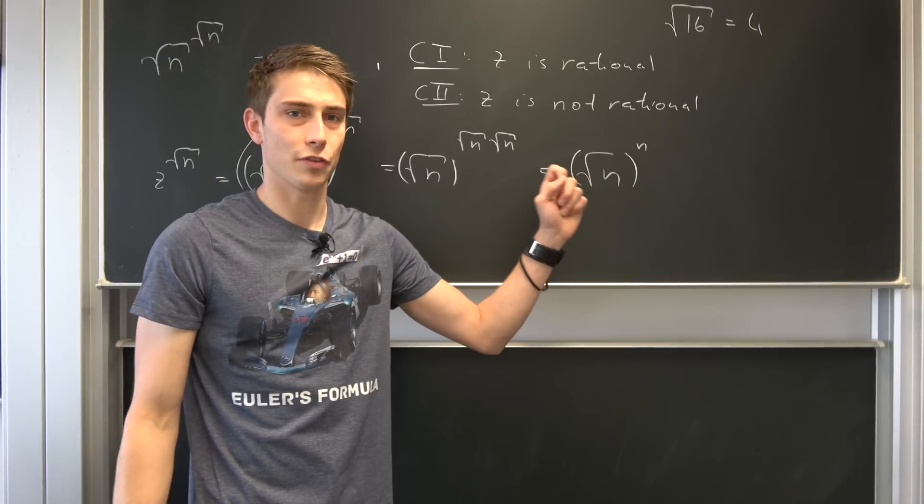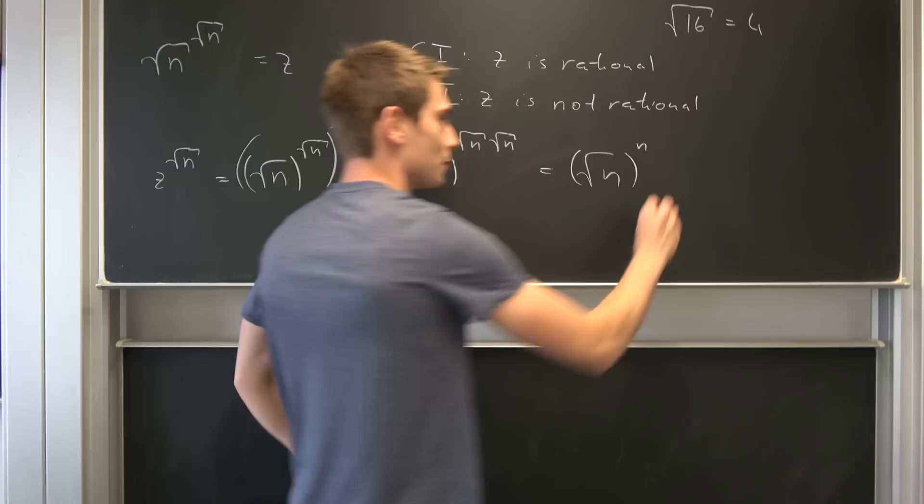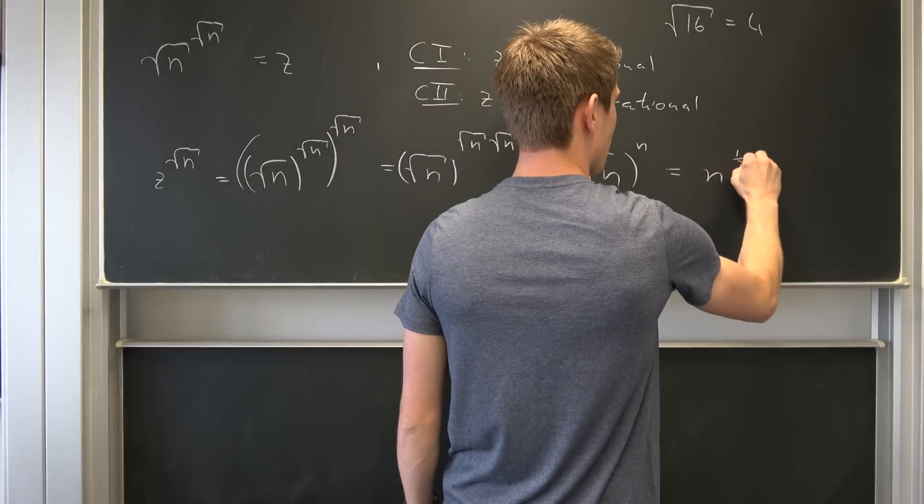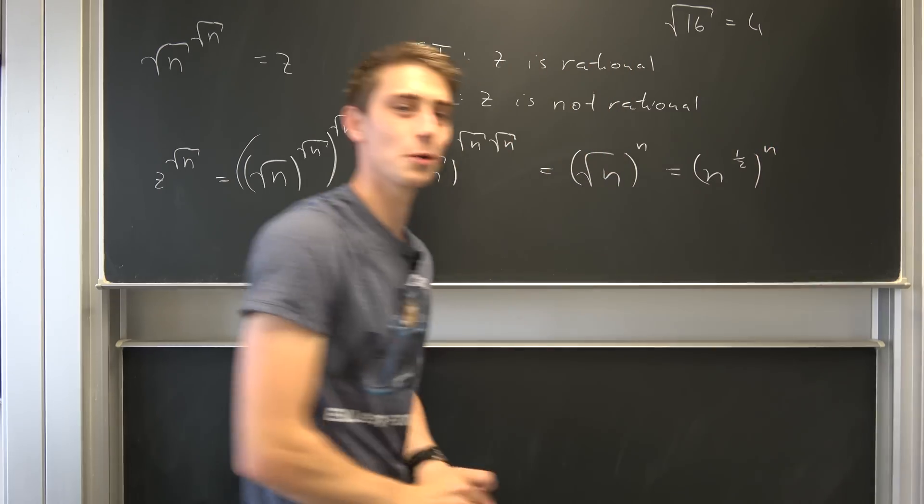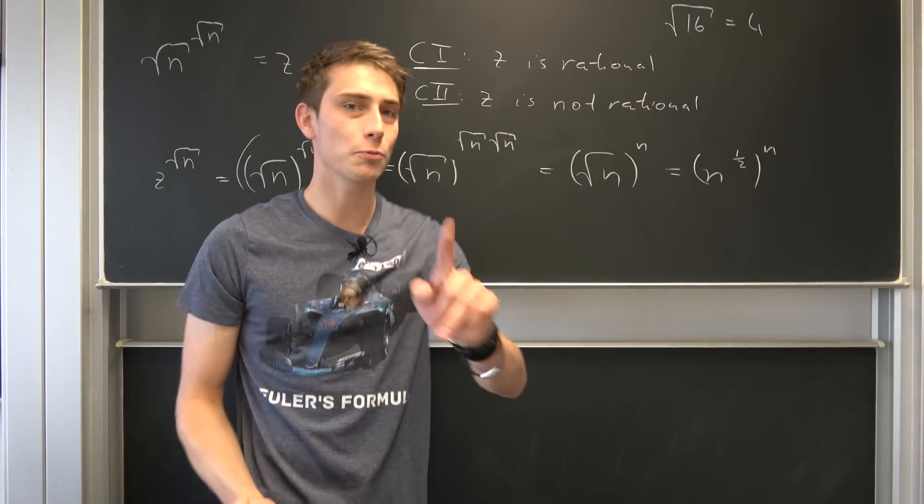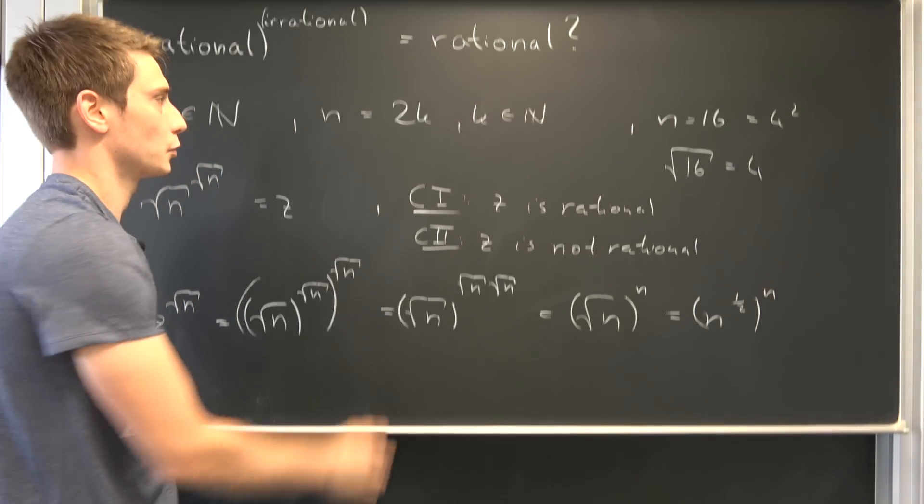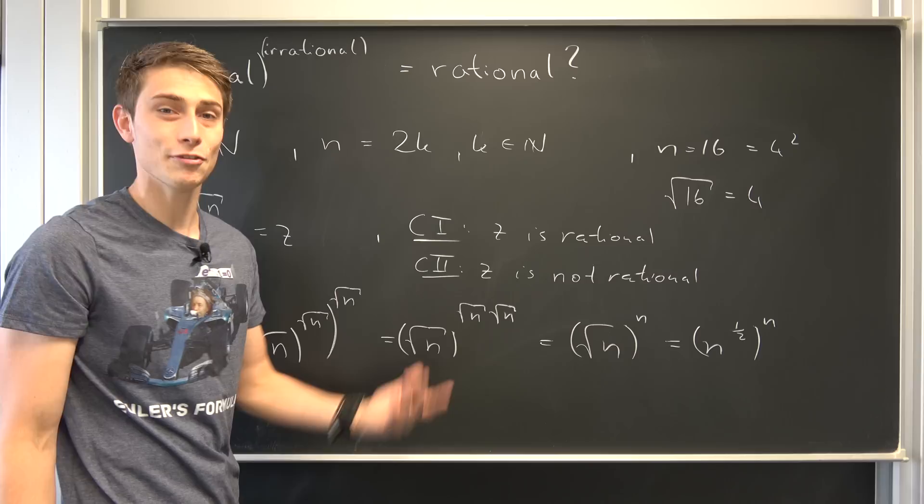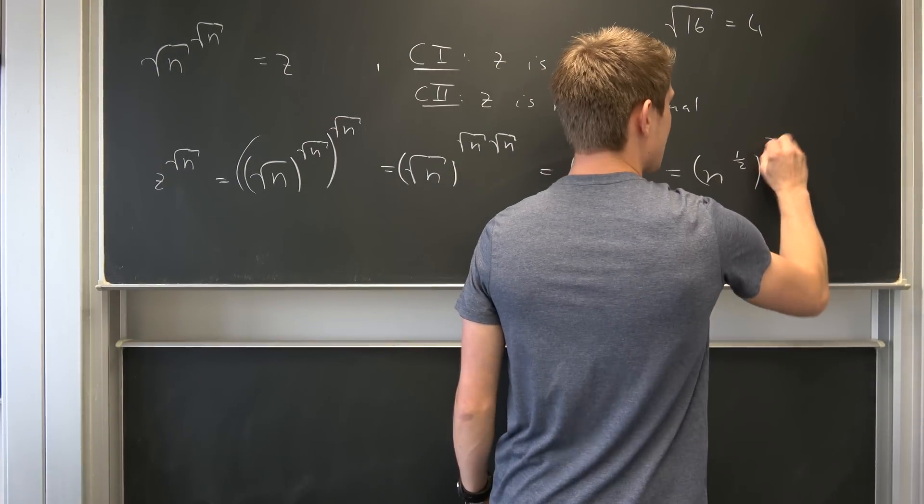But what exactly is the square root of n? Well, this is nothing but n to the one-half power, to the power of n. And don't forget what our n originally was by our restrictions: n is even. We can decompose it into 2 times k.